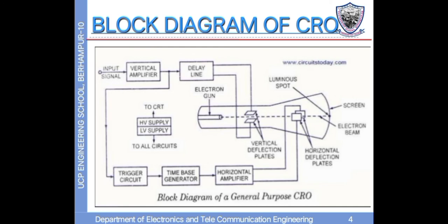The output of the vertical amplifier is given as input to the delay line. We know that the input signal is applied to both the horizontal and vertical deflection plates. Before reaching the horizontal deflection, the signal passes through different blocks such as the trigger circuit, time-based generator, and horizontal amplifier. Thus, a small delay occurs and the signal reaches the vertical deflection plates earlier, which causes disturbance of the signal on the screen.